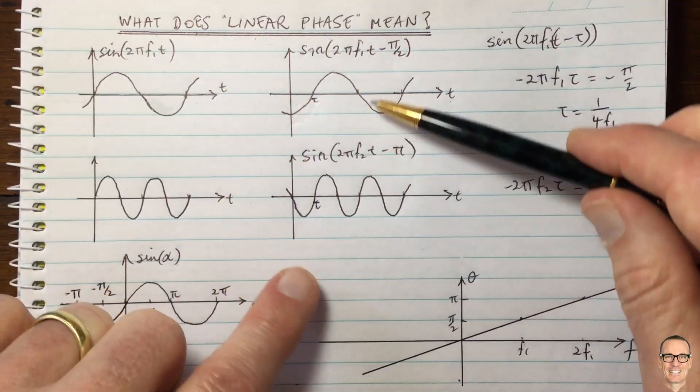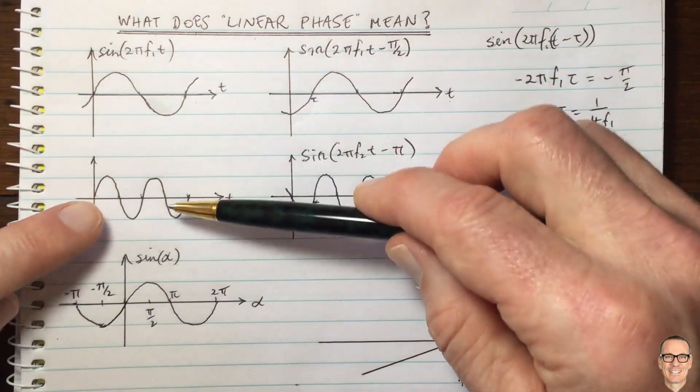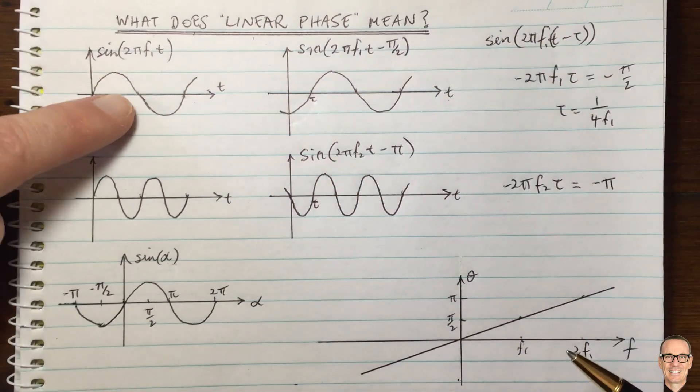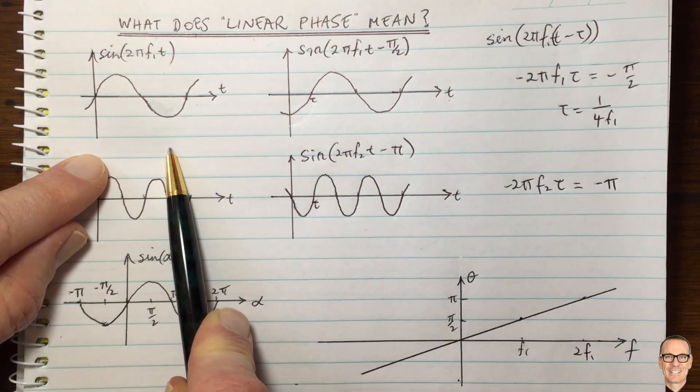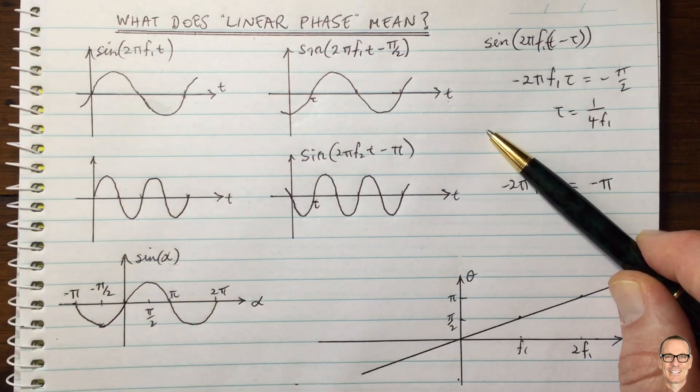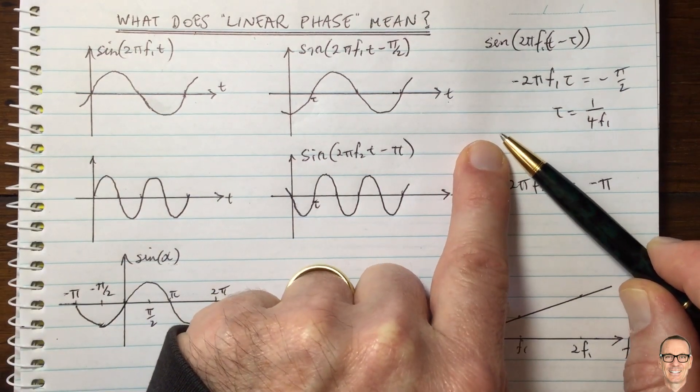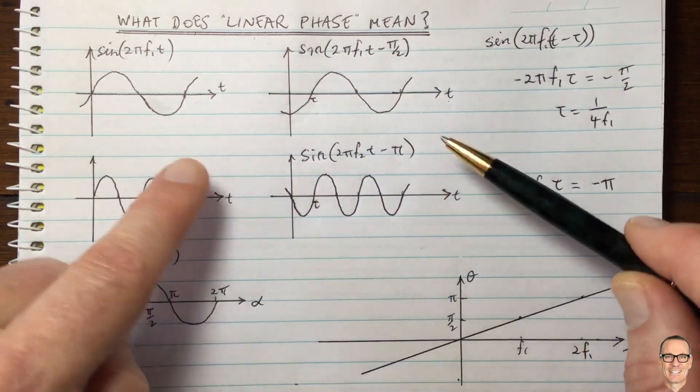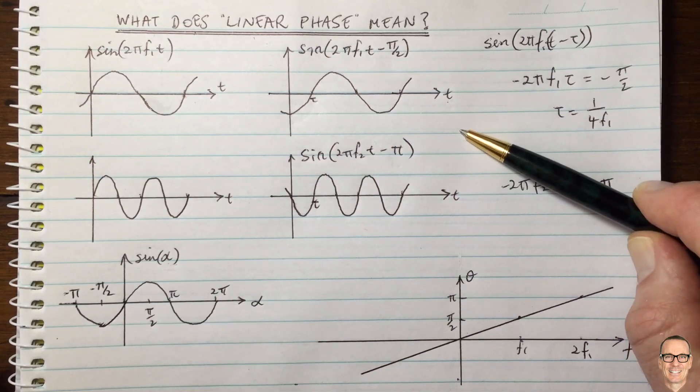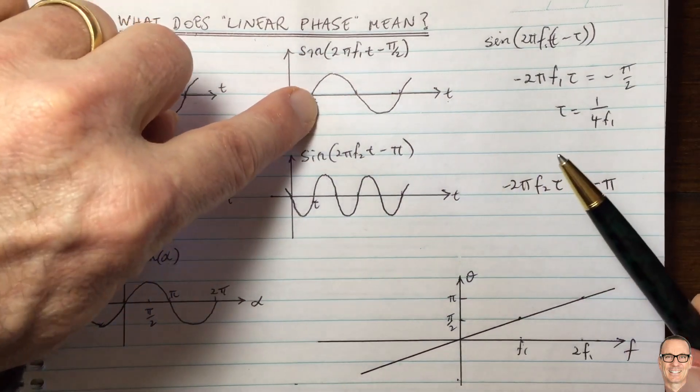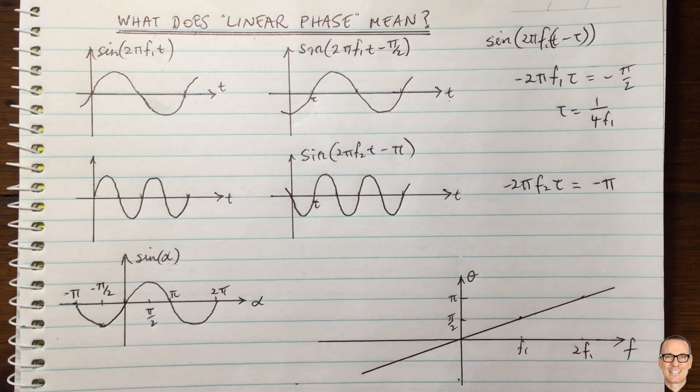Because you can see here for a function, this was one frequency, and this is twice the frequency. But if we had a frequency, which was, let's say, one and a half times this frequency, so it was in the middle here, then you can use the same logic to see that the phase shift would be 3 pi on four. In that case, this was pi on two, this is pi, you can use the same logic of this to see that that would be three pi on two. And so you can see there is a for this delay example, there is a linear phase shift.